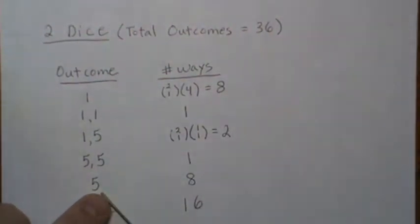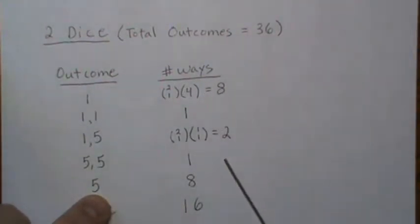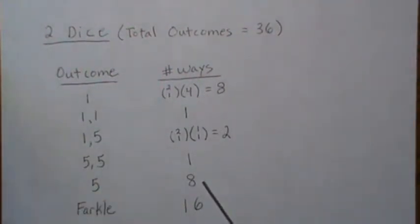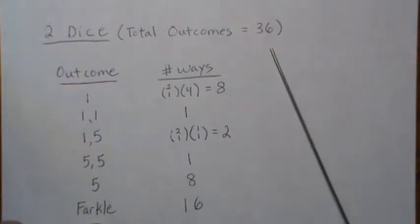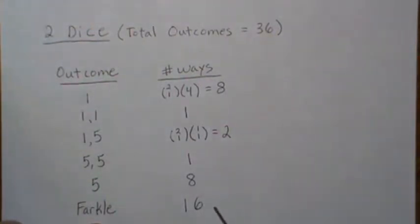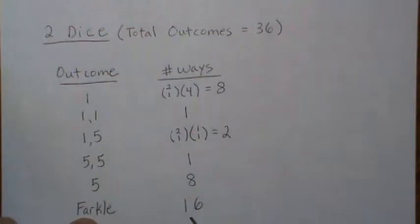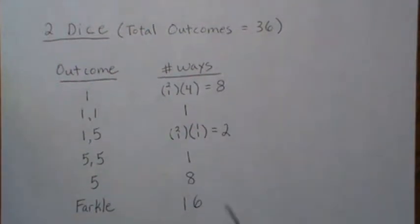To roll exactly one five is the same as to roll a one, so there's eight. Adding those up and subtracting from the number of ways, which gives 16 ways to not score with two dice.